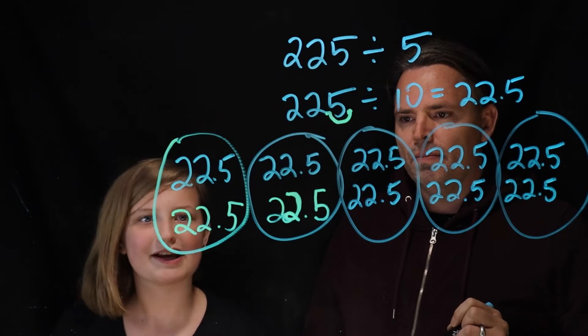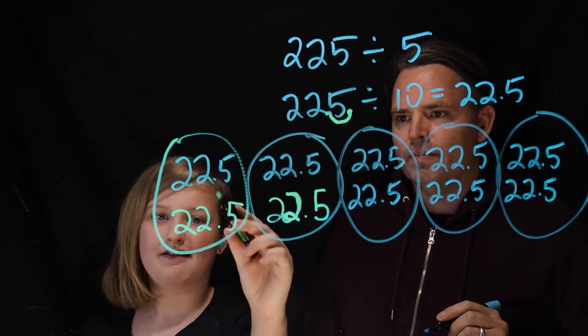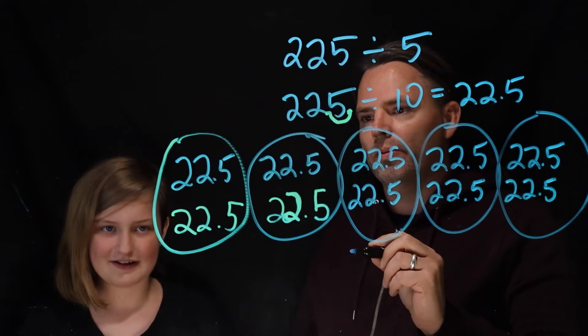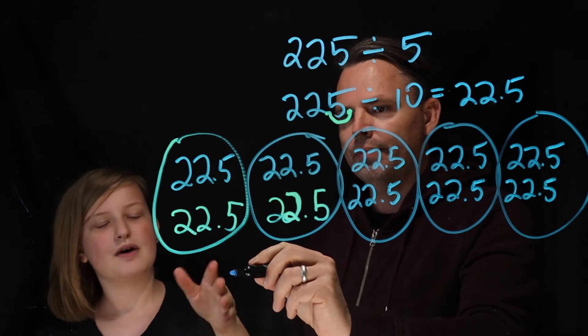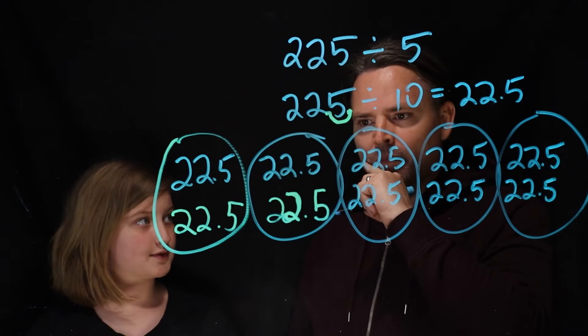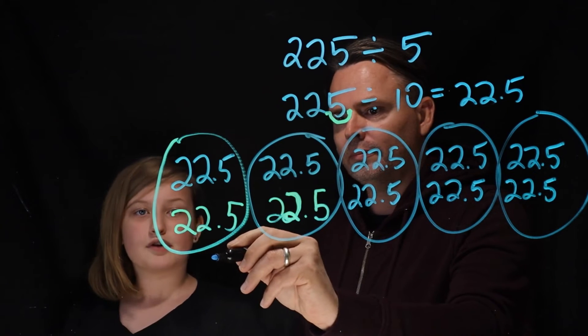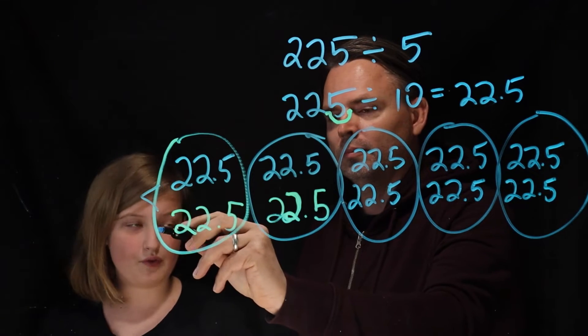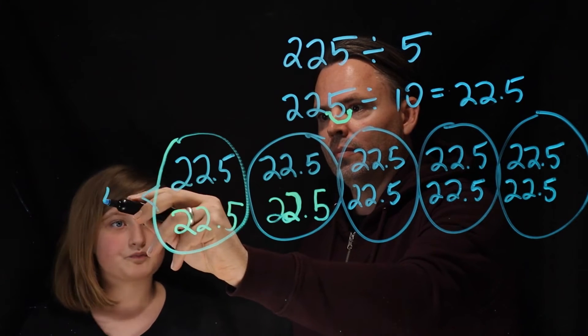Oh, because this would give us five: one, two, three, four, five. Yeah, so now Mark, all we have to do is add 22.5 plus 22.5 together. Okay, and so what would that be?